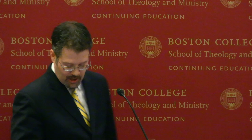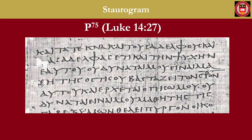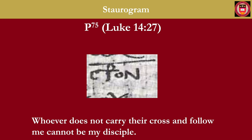You're looking at a section of a papyrus called P75, in which we can read Luke 14:27: 'Whoever does not carry their cross and follow me cannot be my disciple.' Looking at the manuscript, do you notice anything? Right here — this is what says 'cross' in Luke 14:27. The word for cross has been abbreviated, a superlinear stroke has been written, and the tau and the rho have been written together as a ligature to form a staurogram.